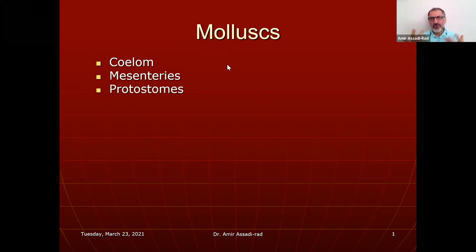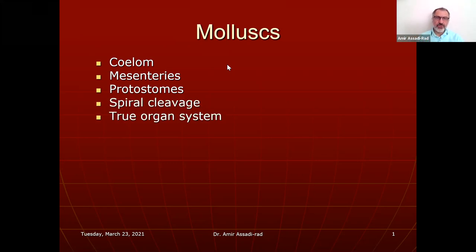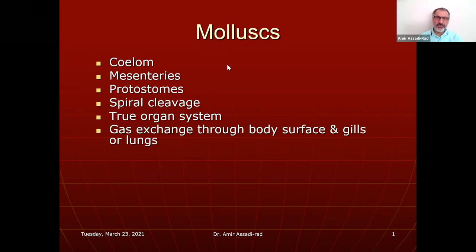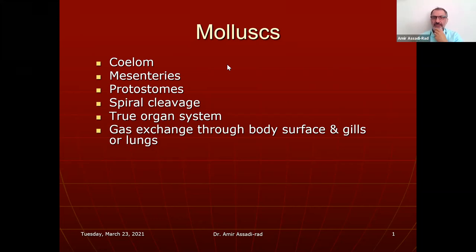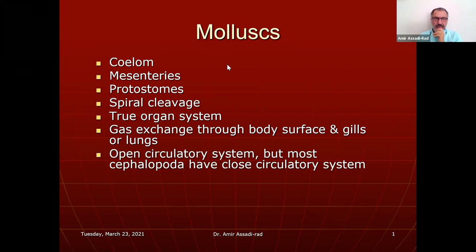They're protostome animals — mouth first, spiral cleavage, true organ systems, gas exchange through body surface and gills. The aquatic ones have gills, the ones on land have lungs. They have an open circulatory system, but most cephalopods have a closed circulatory system.